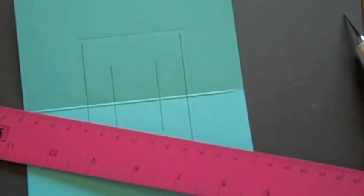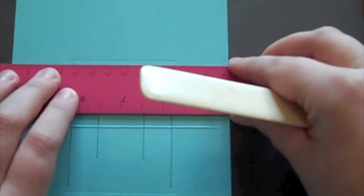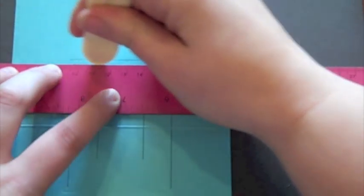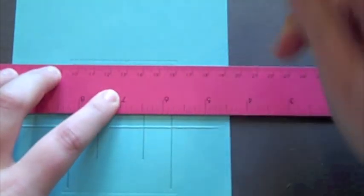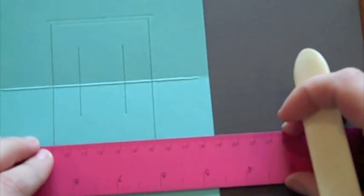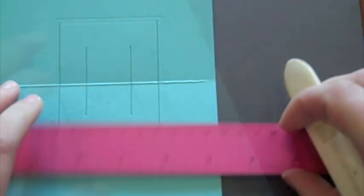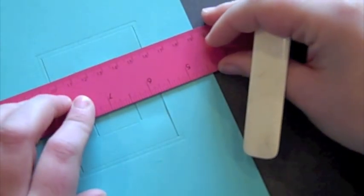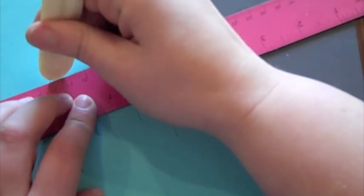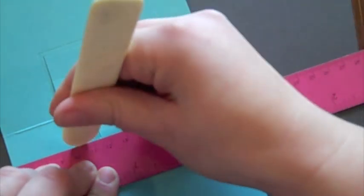So I die cut that and after you do that, you want to do just a little bit of scoring with a ruler and a bone folder. So I'm running a ruler right here at the top and the bottom of the two longest lines that are cut with the die. Like so. I'm going to score along here and here.